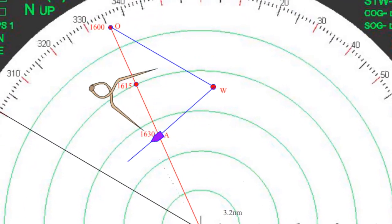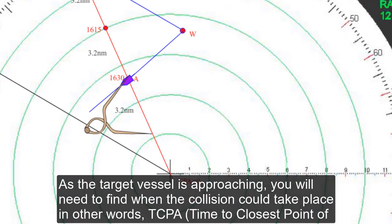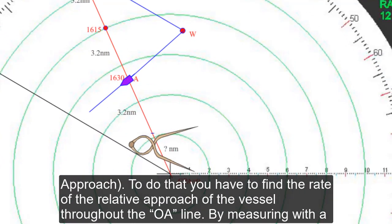As the target vessel is approaching, you will need to find when the collision could take place—in other words, TCPA, time to closest point of approach. To do that, you have to find the rate of the relative approach of the vessel through the OA line.